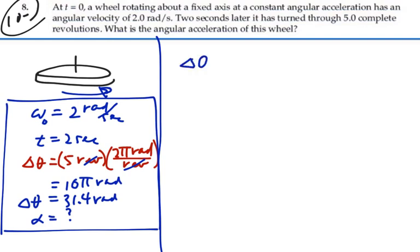And we choose that angular displacement is equal to initial angular velocity times time plus one half angular acceleration times time squared. So solve this for angular acceleration. Let's subtract the omega not t from both sides and multiply it by two divided by t squared.